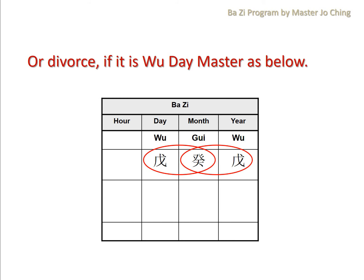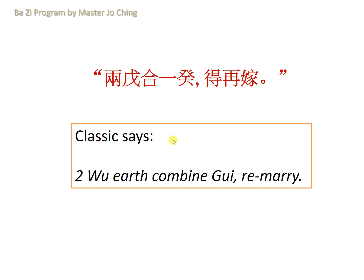Or divorce. If it is actually a WU Day Master — for example, you belong to the WU Day Master, and you have a GUI here, and there is another WU here — there is a saying in the classics: 'Liang Wu He Yi Kui Dei Zai Jia.' In English, it means that if you have two WU trying to combine one GUI, chances are this person will have to re-marry.